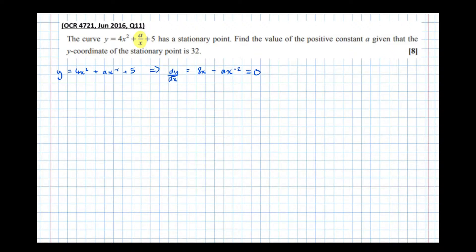Now this form here is absolutely fantastic for differentiating index form. However, it's absolutely lousy for solving equations, so now it will help to write it back in normal fraction form. So I've got 8x - a/x² = 0.